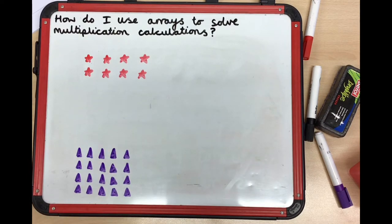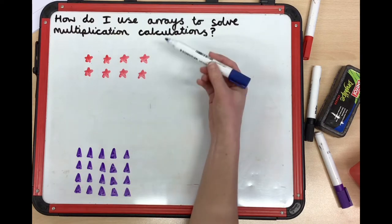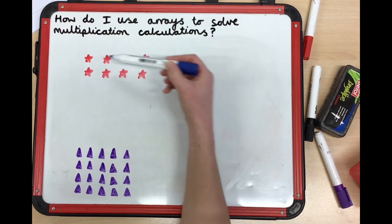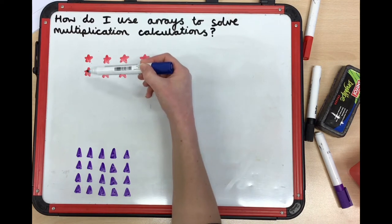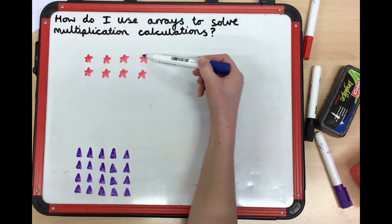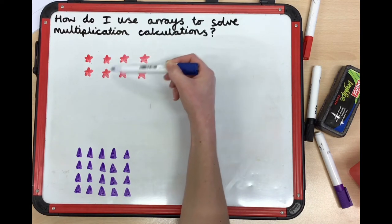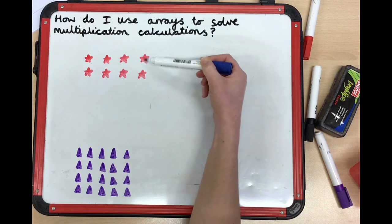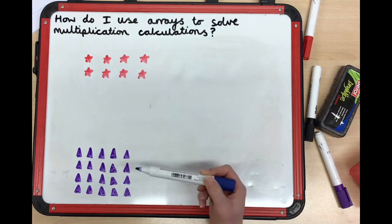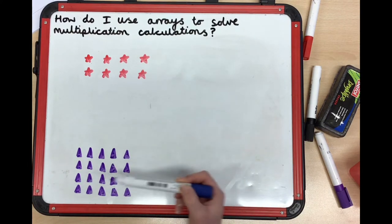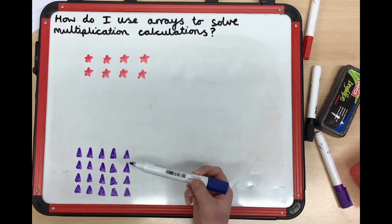How many do we have altogether? We could also look at the columns. Columns go down. How many columns do we have? We have one, two, three, four columns, with two in each column.